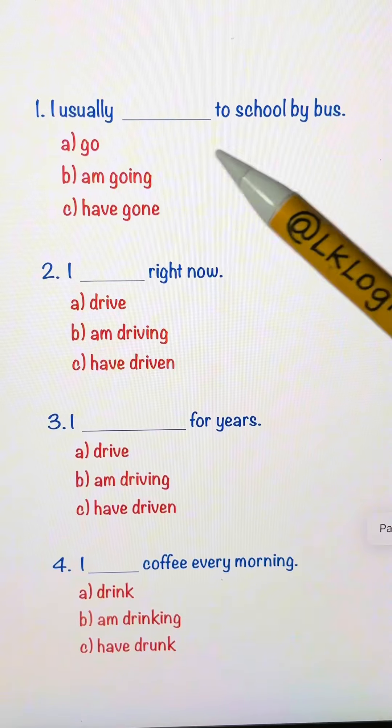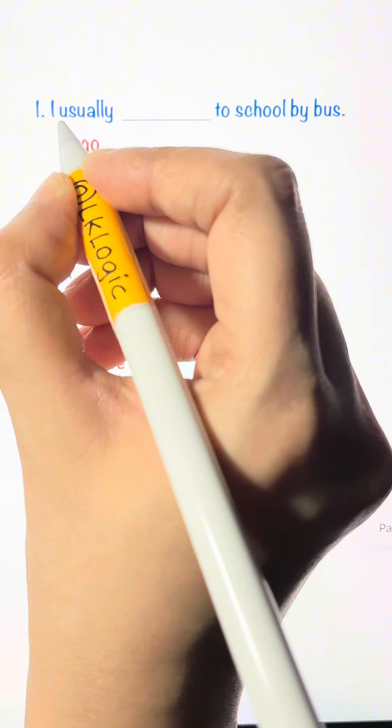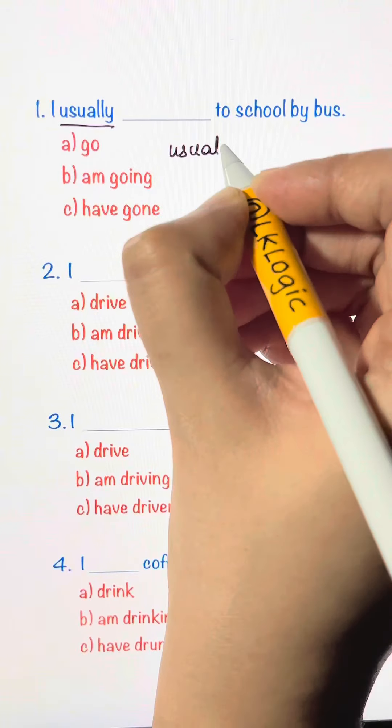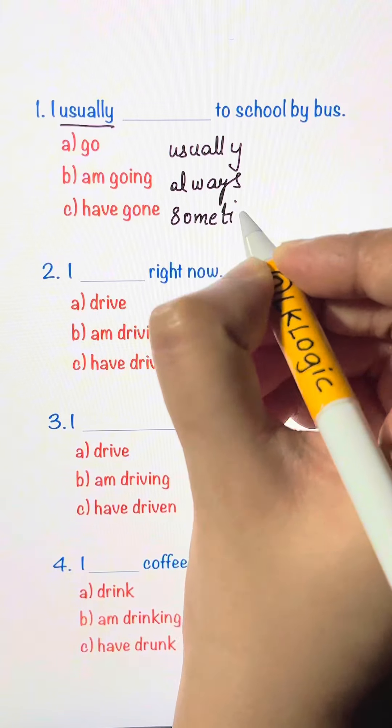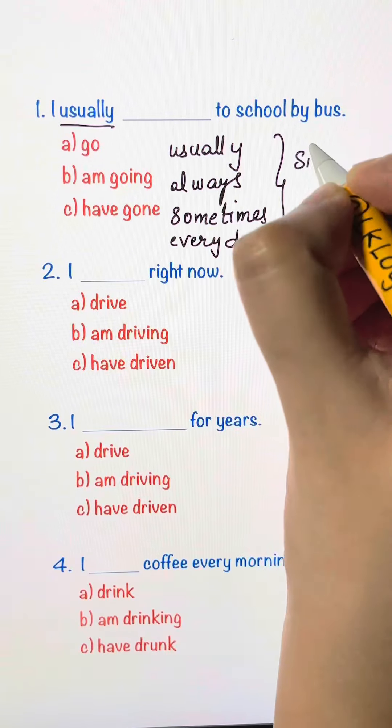I usually blank to school by bus. Go, I'm going, have gone. So the keyword here is usually. Whenever you have words like usually, always, sometimes, every day, we use simple present tense.